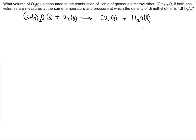Now let's balance — this is unbalanced at the moment. You can see that there are two carbon atoms, so we need to add a 2 in front of CO₂ because the 2 here applies to the oxygen. Now there are 6 hydrogen atoms — 3 times 2 — so we need to put a 3 in front of H₂O. As for oxygen atoms, we have 3 plus 4, that's 7, so we need a 3 in front of O₂, since 3 times 2 equals 6.